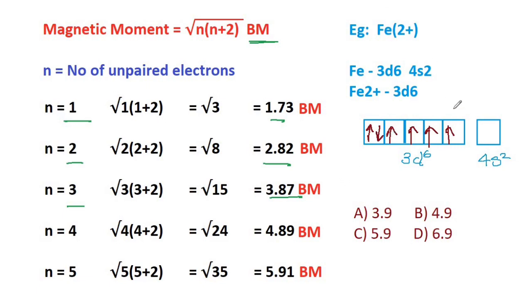You can clearly observe we have 4 unpaired electrons. 4 unpaired electrons, the value will be 4 point something. Answer will be directly option B here.